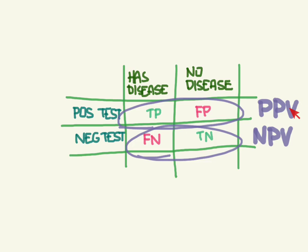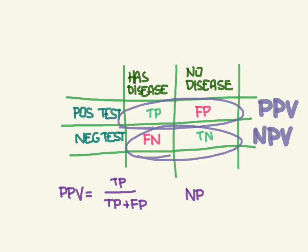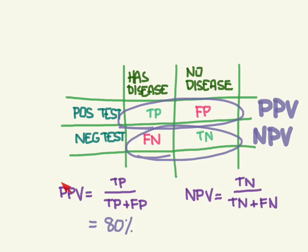Let's do positive predictive value first: true positives over all the times the test was positive. And for the negative predictive value: true negatives over all of the times the test was negative, which is true negatives plus false negatives. So if you have a positive predictive value of 80%, that means 80% of the time a positive test will be correct — the patient has the disease. And a negative predictive value of 75% means three quarters of the time a negative test is right, and the patient does not have the disease.